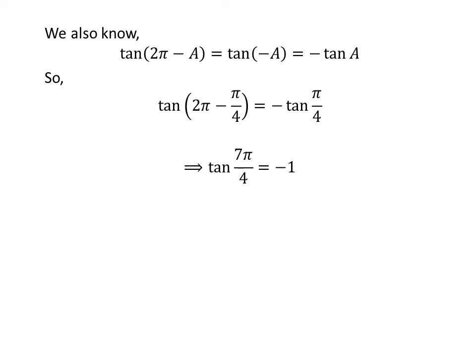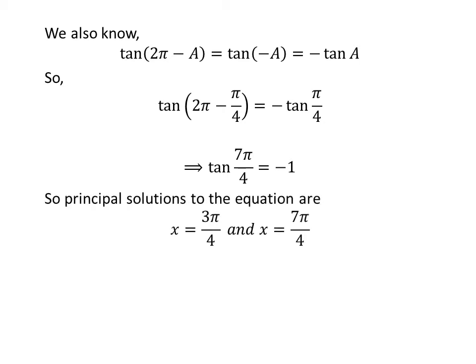Applying the identity as before, we get tangent of 7 times pi upon 4 is equal to minus 1. So the principal solutions to the equation tangent of x is equal to minus 1 are 3 times pi upon 4 and 7 times pi upon 4.